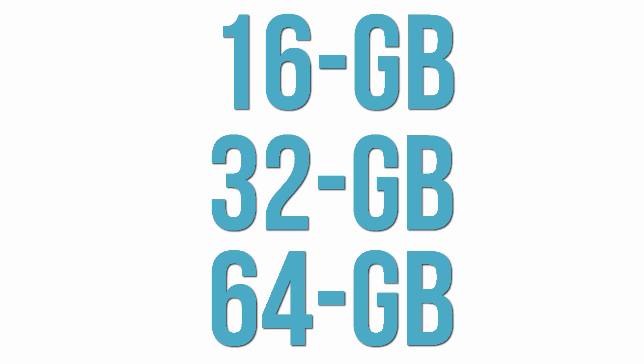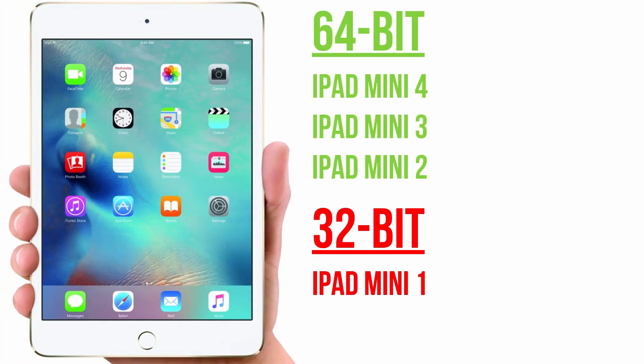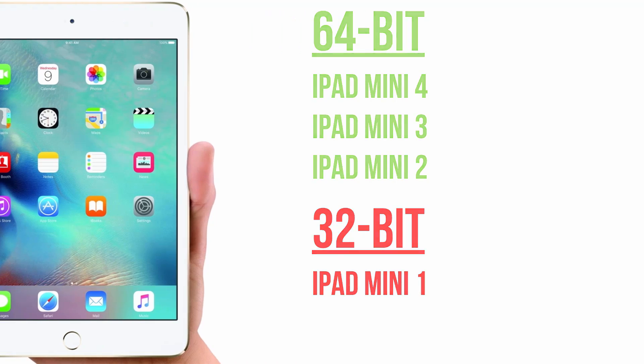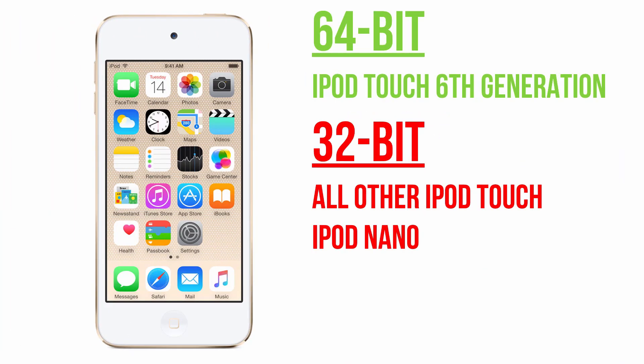When we talk about bits we're talking about how the information is handled by your CPU on your iOS device. 64-bit is better than 32-bit because it can handle more, and as iPhones, iPads, and iPods have advanced in technology we've moved from 32-bit to 64-bit. A list of all these devices and which bit they are is on screen now. Recently Airshow was updated to a 64-bit application, which meant that it didn't work on 32-bit devices anymore.